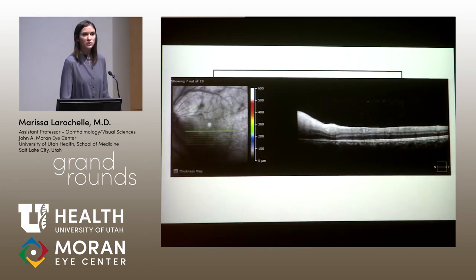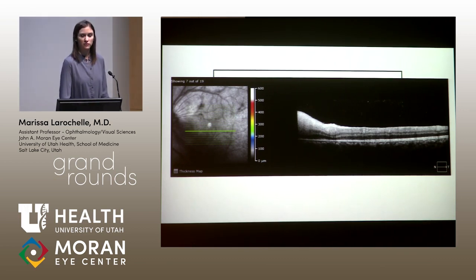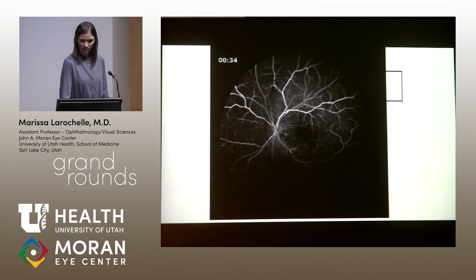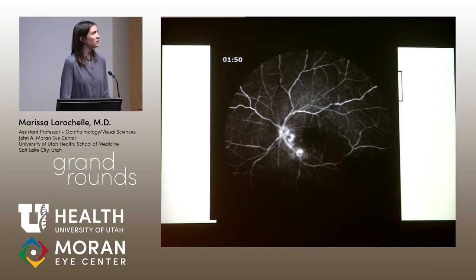This is an OCT through the area — normal temporally, and then on the nasal side there's a hyperreflective infiltrate of the retina. Fluorescein angiography early shows some blockage in the area of retinal hemorrhage, and then later some hyperfluorescence or leakage in the area of retinitis and a little bit of retinovascular leakage.